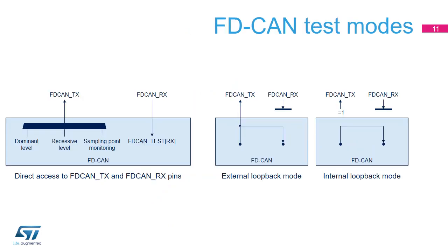To enable write access to the FDCAN test register, the test bit in the CCCR register must be set to 1, thus enabling the configuration of test modes and functions. In test mode, software can control the state of the FDCAN-TX pin and can read the state of FDCAN-RX. Through the FDCAN test register, software can control the FDCAN-TX output: force dominant level, force recessive level, or monitor the sample point. The actual value at pin FDCAN-RX can be read from the RX bit in the FDCAN test register. Both functions can be used to check the CAN bus physical layer. These test modes should be used for production tests or self-test only.